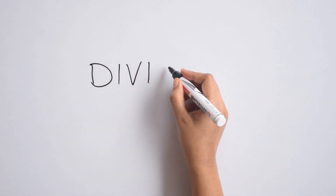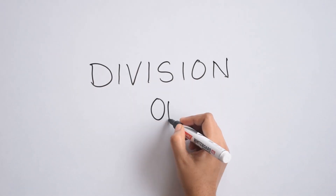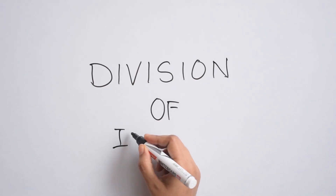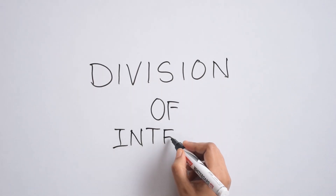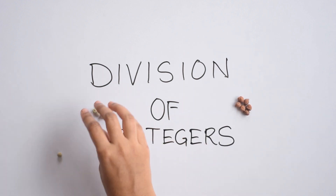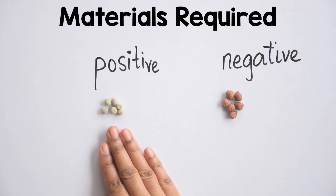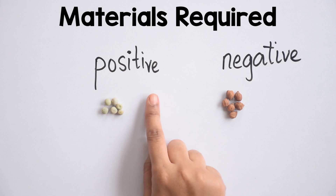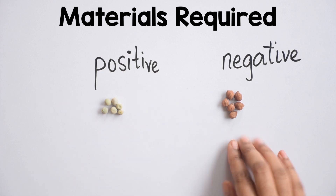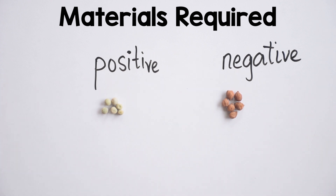Hello and welcome to Kathadi. In this video, we will be learning division of integers using the concrete approach, meaning we will be using materials. We will be using green peas to denote positive integers and chickpeas to denote negative integers. You can use whatever material is available in your surroundings.